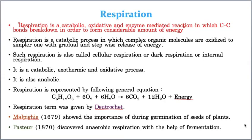Metabolism is differentiated into two types: the first is anabolism and the second is catabolism. Anabolism means the chemical reaction in which two small molecules join to form a big molecule — it is a constructive process. For example, during photosynthesis, 6CO₂ plus 12H₂O react in the presence of sunlight to produce C₆H₁₂O₆, that means glucose. So two or more molecules joining to form a big molecule is called anabolism.